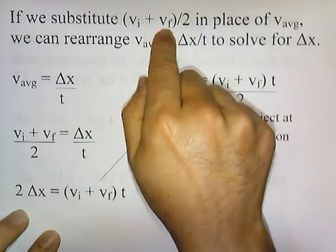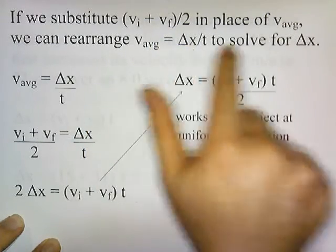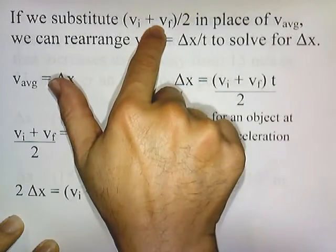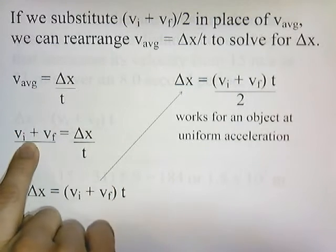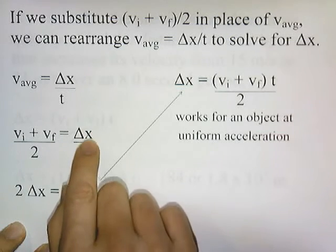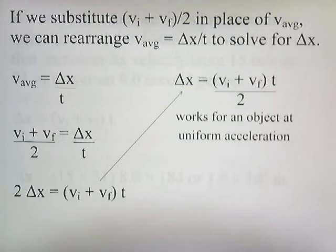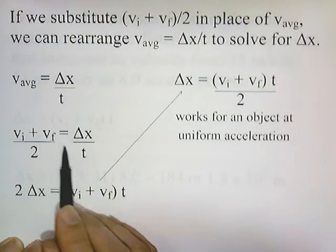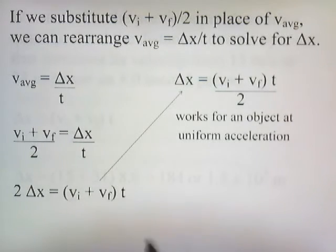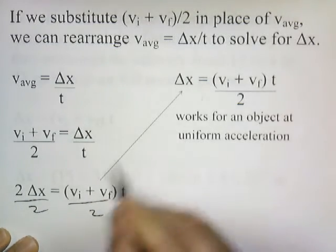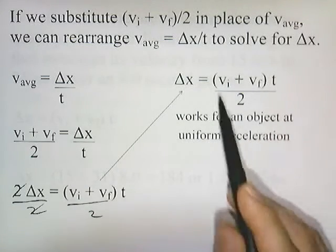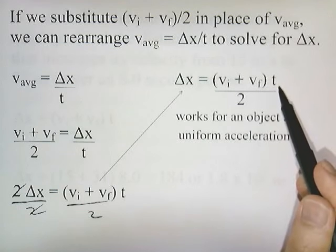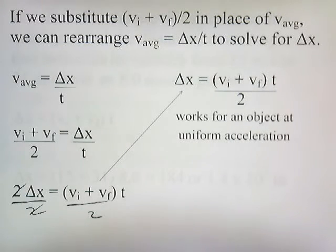Now if we substitute vi plus vf divided by 2 in place of v-average, we can rearrange the formula to solve for change in x. Starting with v-average equals change in x over t, we replace v-average with vi plus vf divided by 2. Cross-multiplying gives 2 times delta x equals vi plus vf times t. Dividing both sides by 2, the 2's cancel, and we get: delta x equals vi plus vf times t divided by 2. This formula works for any object undergoing uniform acceleration when you know its initial velocity, final velocity, and elapsed time.